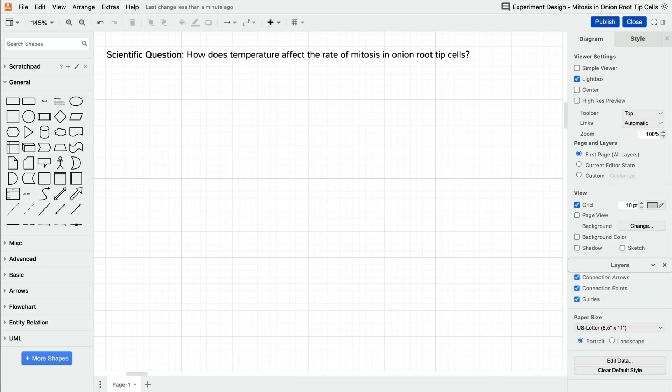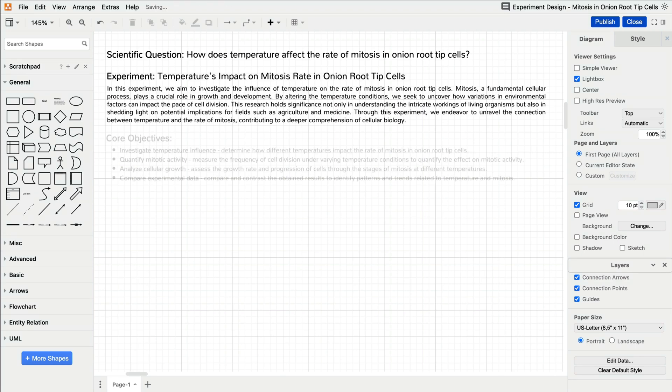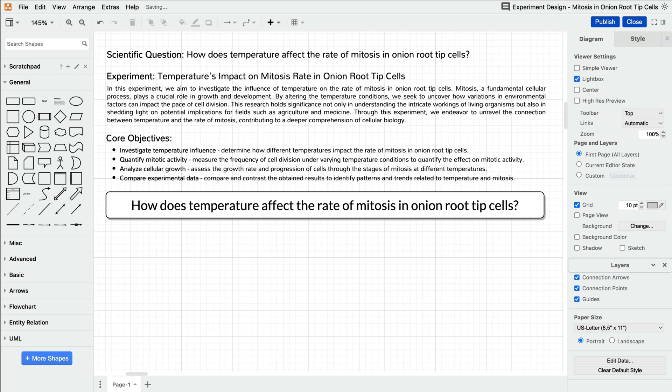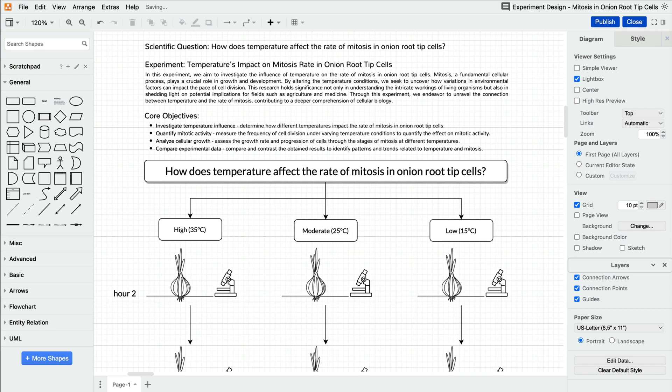It all begins with your scientific question. Within Draw.io, you can brainstorm and outline the core objectives of your experiment. When this introductory phase is complete, then you can dive into designing your experimental setup.